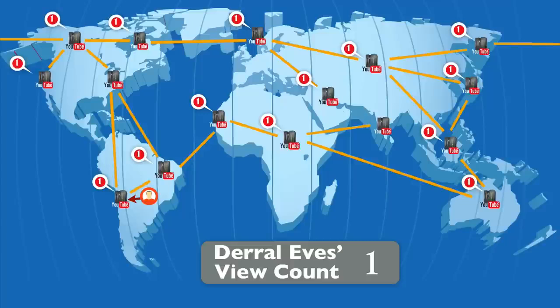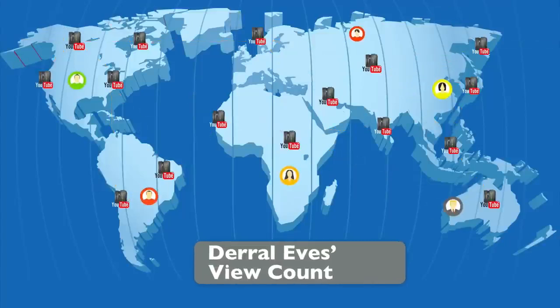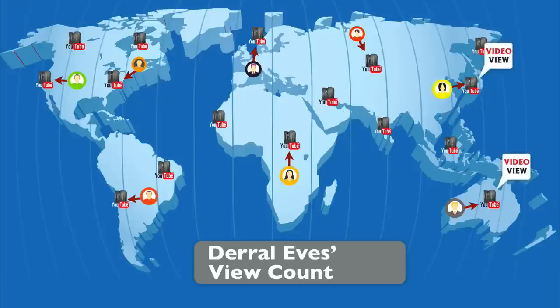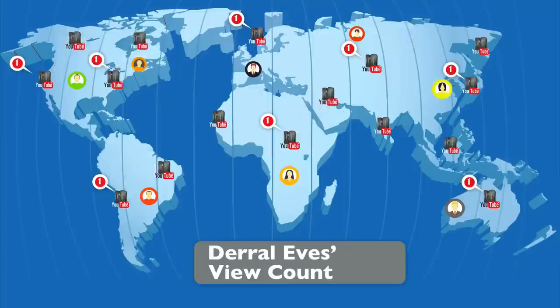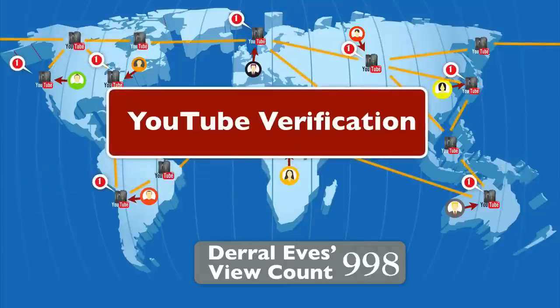Here's where it gets really interesting. Let's say 998 people want to watch that video in one day. They're all around the world, all hitting different facilities, all getting those different video views. The log files come in and get sent back to that central location. YouTube then does a verification — it says, wait a minute, we want to make sure those 998 views were actually real and not some bot. So it actually puts it on a temporary hold at 301, and that 301 is sent out to all the different servers so you're able to see the view count as 301.